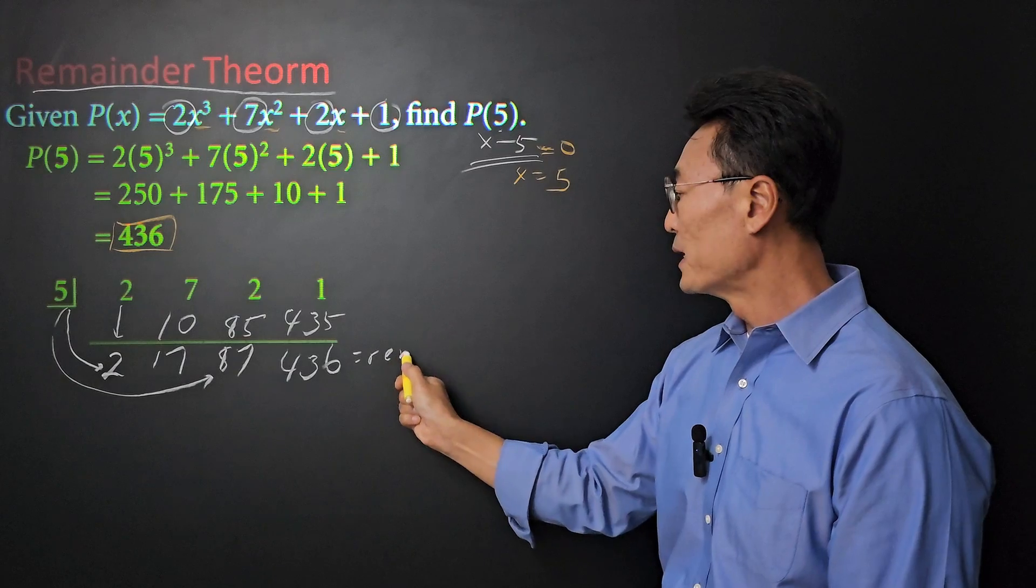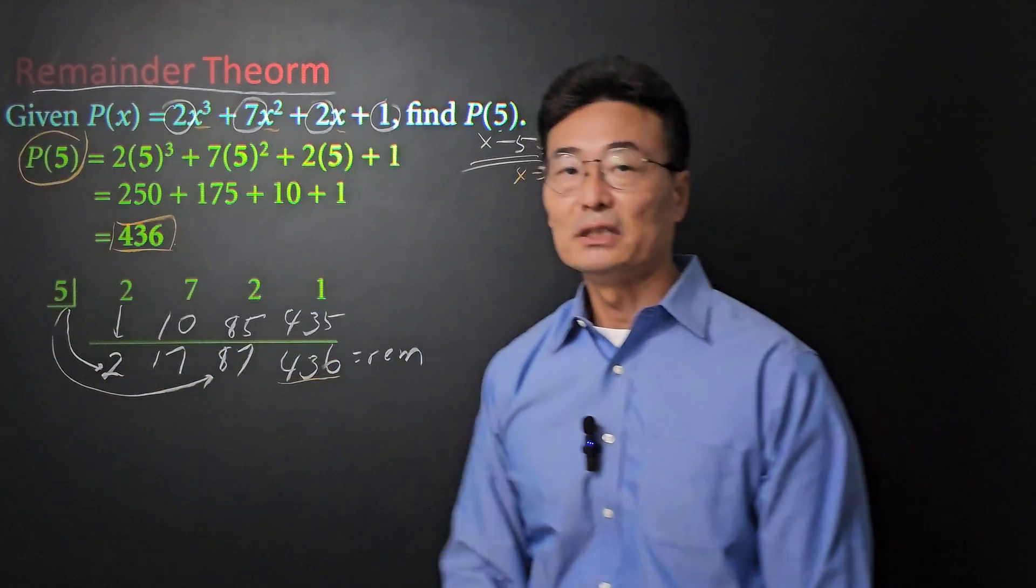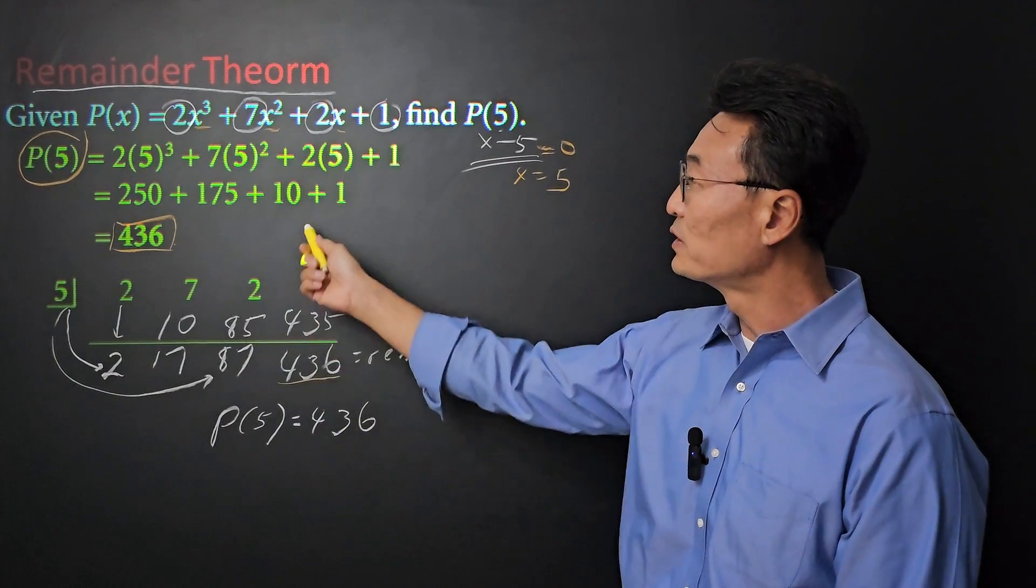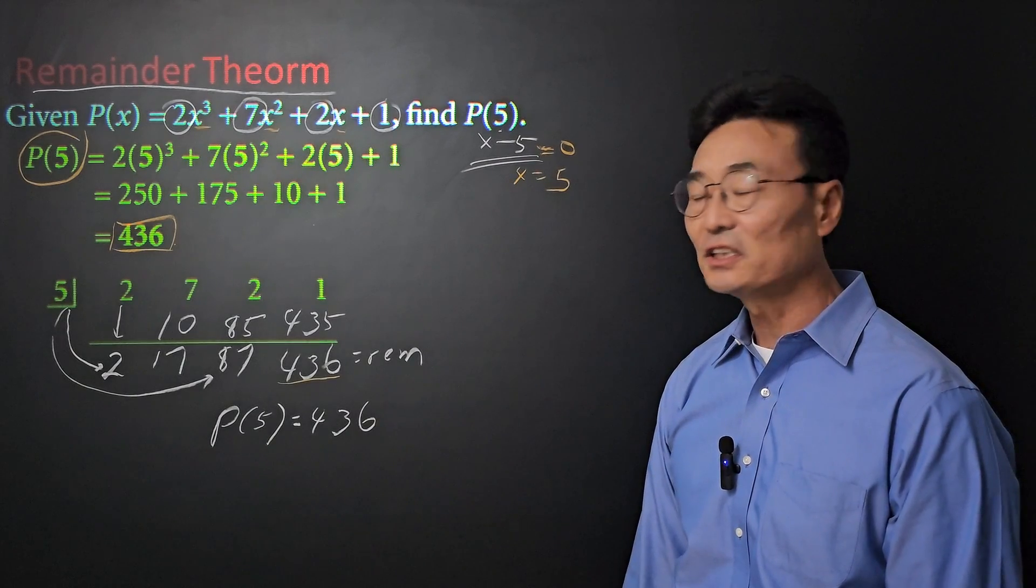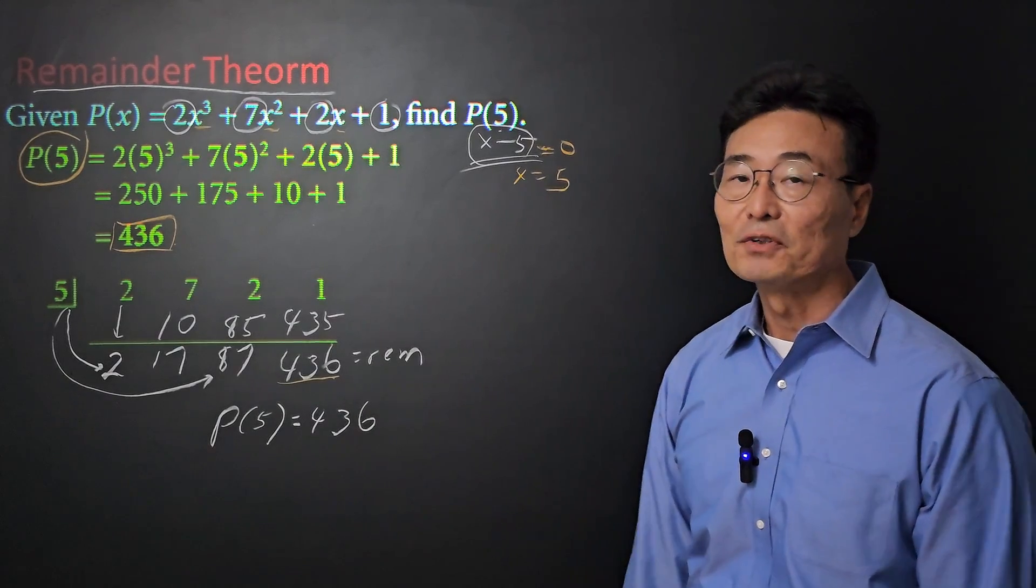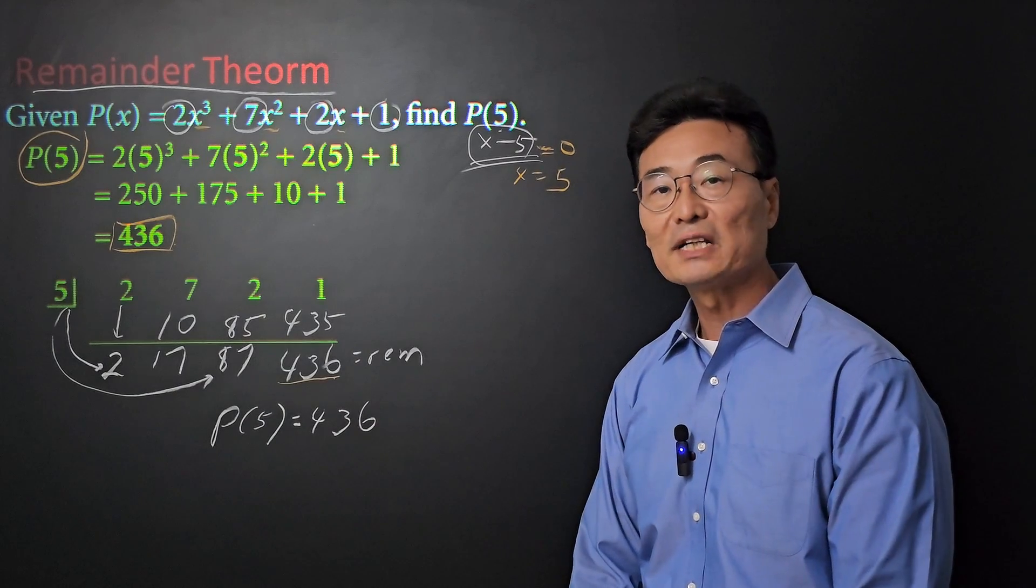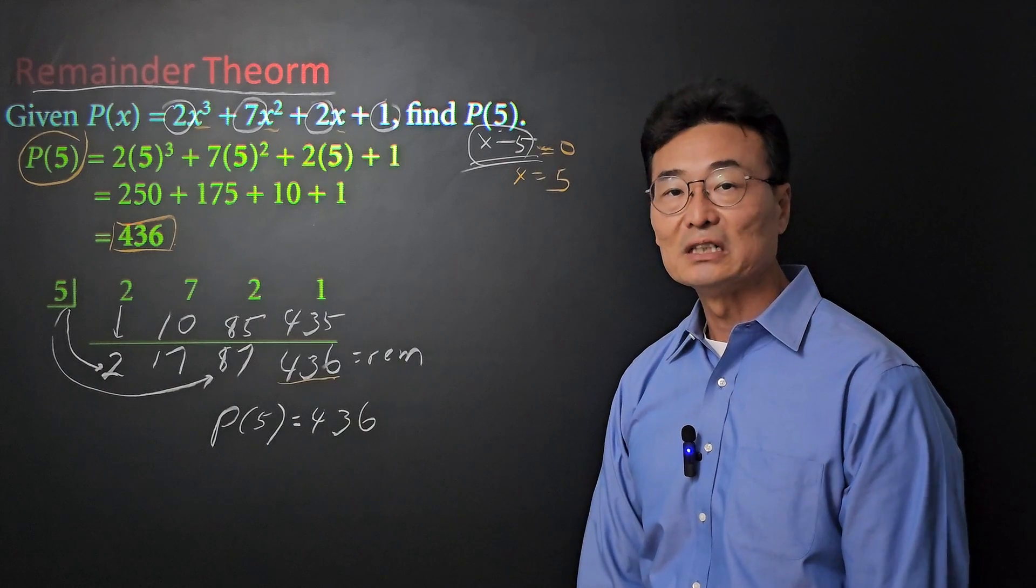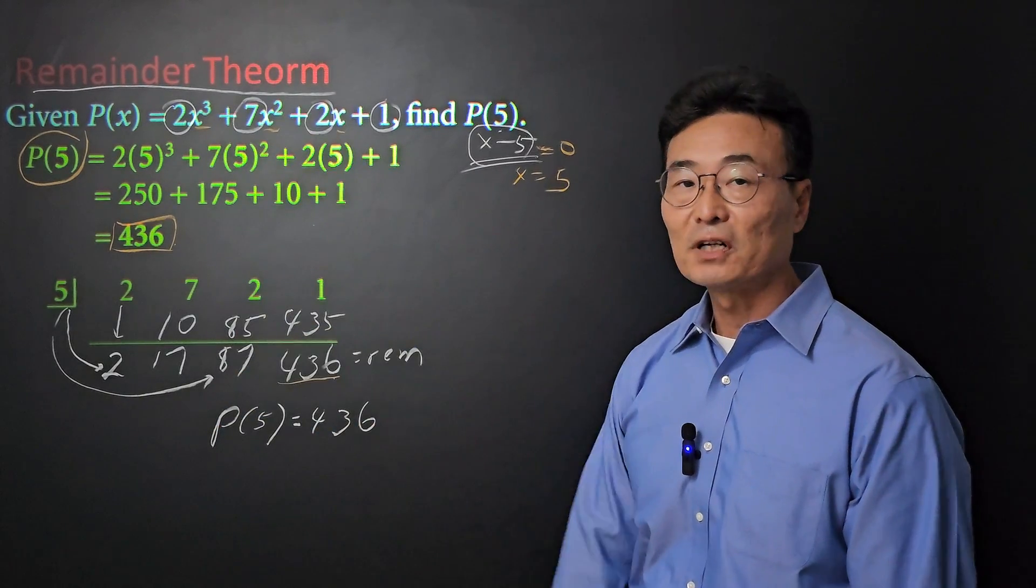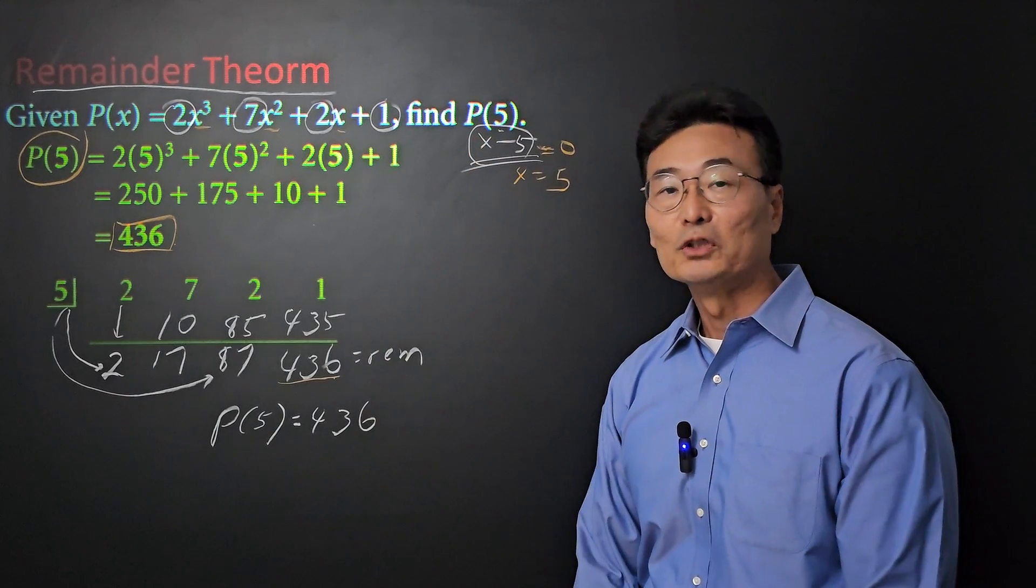But at the same time, if you notice, the 436 is the 436 we got when we actually did the P of 5. So, P of 5 is going to be 436, whether you do it the traditional method by plugging in the 5 into the function, or finding the remainder of the function divided by x minus 5. So there you have it. I've done several examples on synthetic division to compare with the long division, and another synthetic division example that has a remainder. And ultimately, I showed you the remainder theorem, how it's used. And I can't say this is always going to be better, but the more complicated the function is, the more suitable the synthetic division will be for finding the value of a number when you plug it into the function.